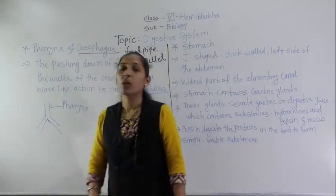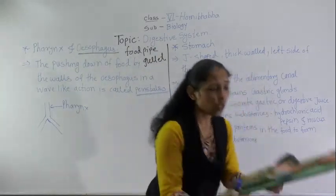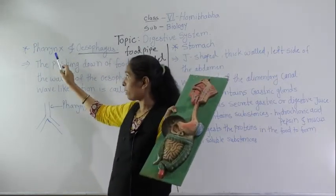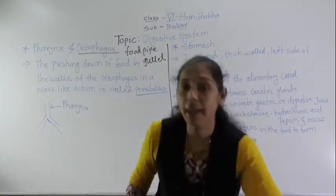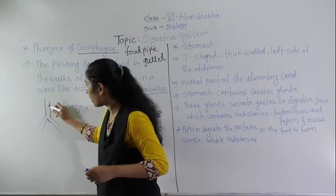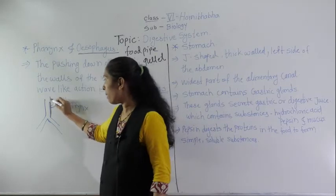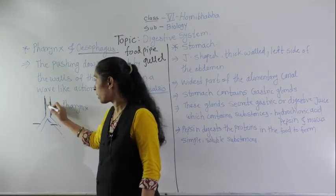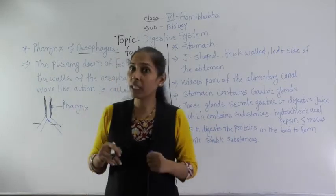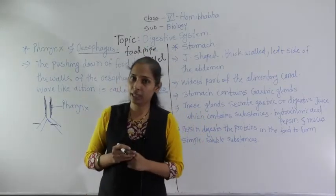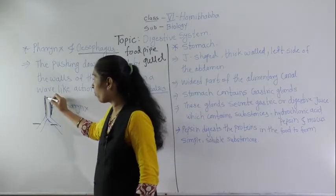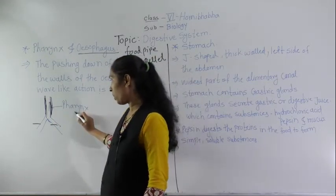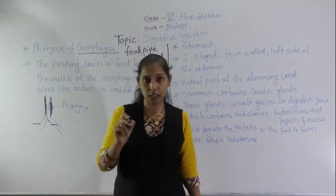Before discussing the esophagus, we will discuss the pharynx. The buccal cavity ends into the pharynx. The pharynx is a muscular organ. The wind pipe and the food pipe share this common passage — since we take both air and food through the mouth, both travel through this same passage called the pharynx.